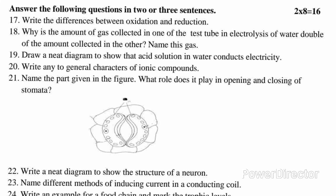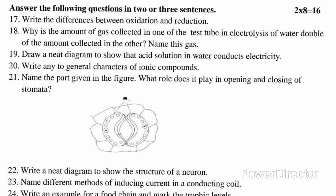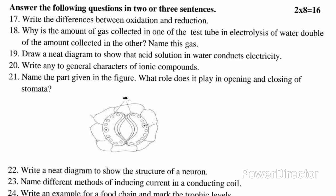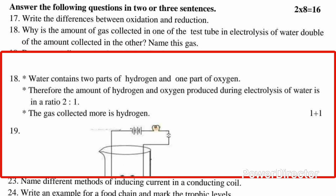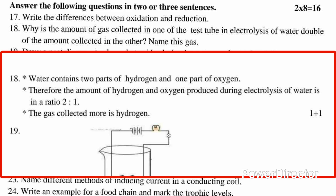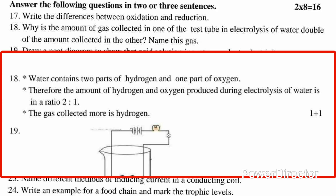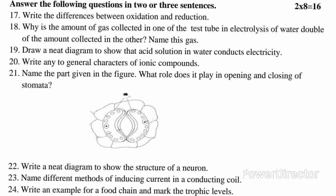Question 18: Why is the amount of gas collected in one of the test tubes in electrolysis of water double of the amount collected in the other? Name this gas. Answer: Water contains two parts of hydrogen and one part of oxygen. Therefore, the amount of hydrogen and oxygen produced during electrolysis of water is in ratio 2:1. The gas collected more is hydrogen.